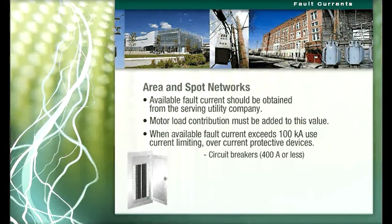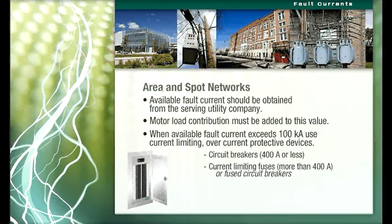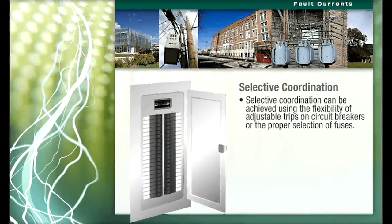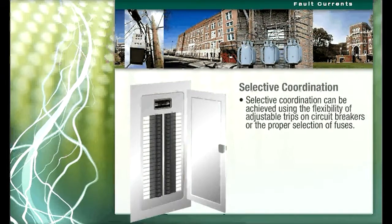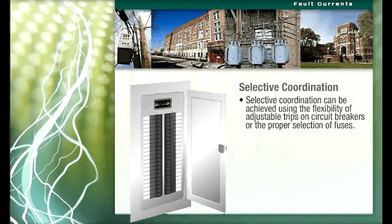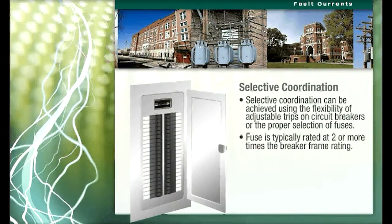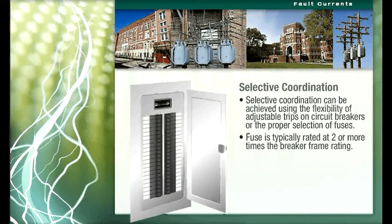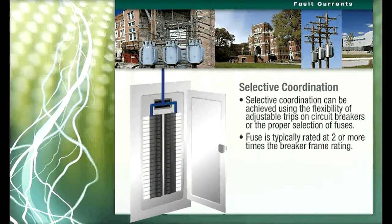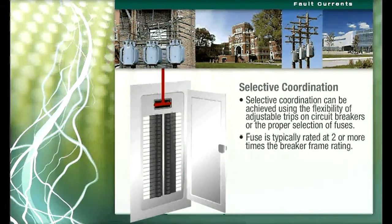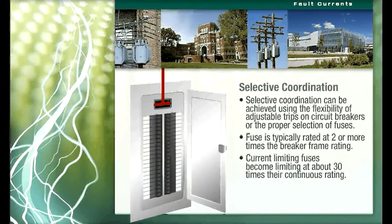For circuits rated more than 400 amps, current limiting fuses are used. The common practice is to use fuse-circuit breaker combinations. Selective coordination can be achieved using the flexibility of adjustable trips on circuit breakers or the proper selection of fuses. When the combination of fuse and breaker are used, the fuse is typically rated at two or more times the breaker frame rating, so its rupture point is above the breaker trip value for all but the most severe faults. For current limiting fuses, they become limiting at about 30 times their continuous rating.